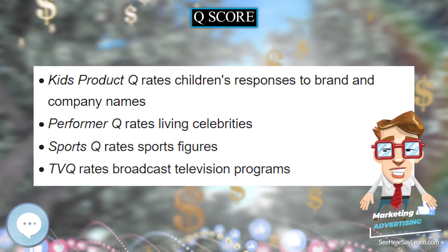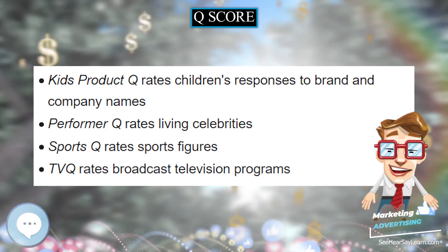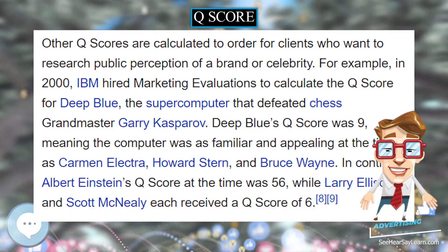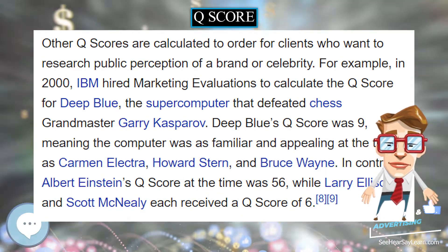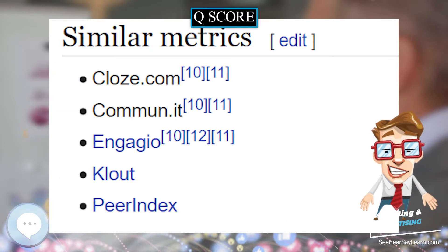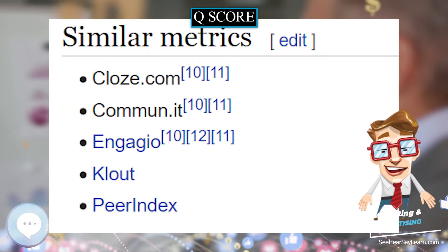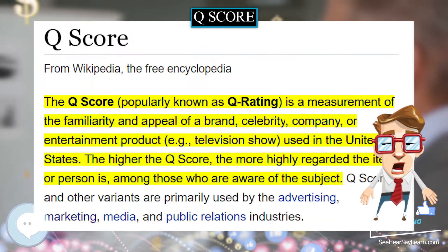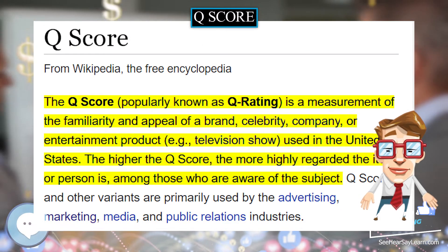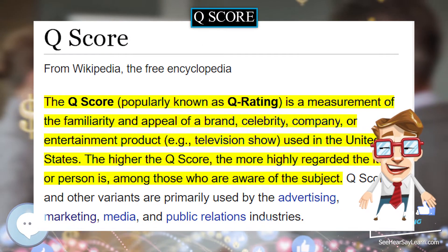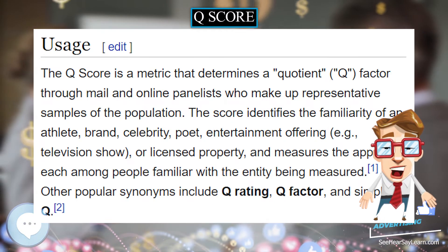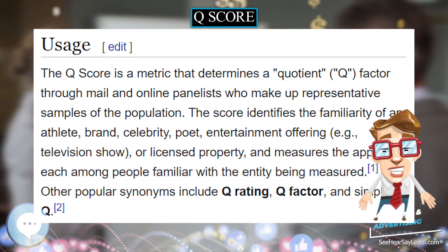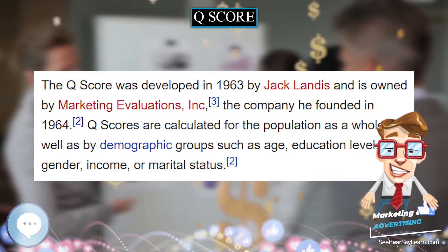Q-score respondents are given choices for each person or item being surveyed. The positive Q-score is calculated by counting how many respondents answered A, divided by the number of respondents answering A and E, and calculating the percentage — that is, multiplying the fraction by 100. Put another way, Q+ equals favorites divided by known, times 100.